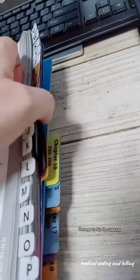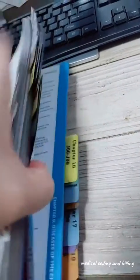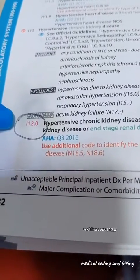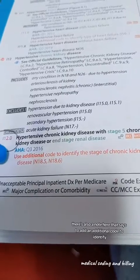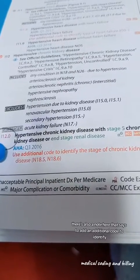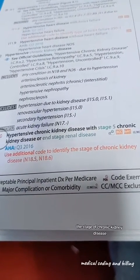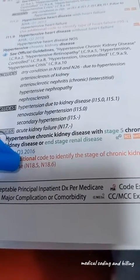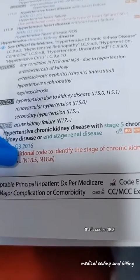Then go to I in the tabular and find code I12.0. There's also a note here that says to add an additional code to identify the stage of chronic kidney disease. In this example, that's code N18.5.